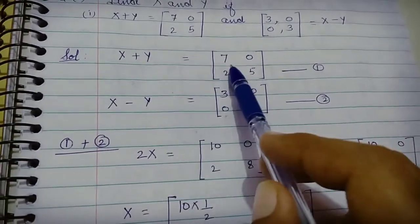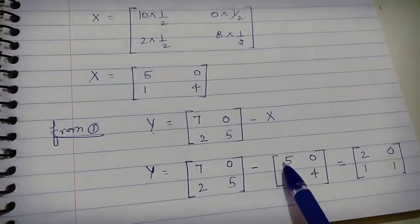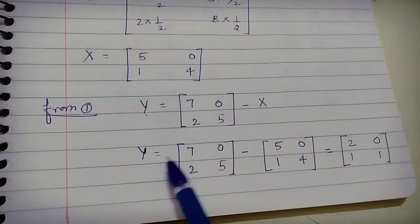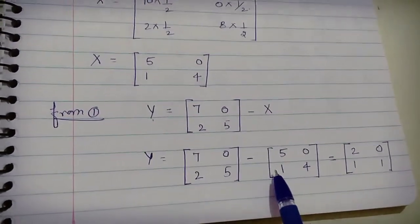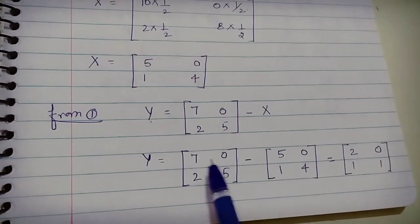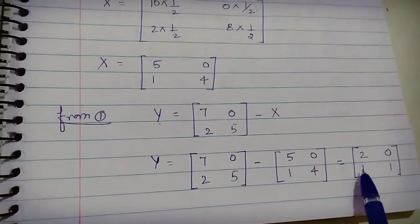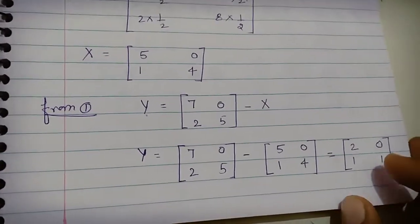Now substituting the value of X into equation 1, Y equals [7, 0, 2, 5] minus X, which is [5, 0, 1, 4]. The difference of two matrices equals the difference of corresponding elements, so 7 minus 5 equals 2, 0 minus 0 equals 0, 2 minus 1 equals 1, and 5 minus 4 equals 1. Therefore Y equals [2, 0, 1, 1].